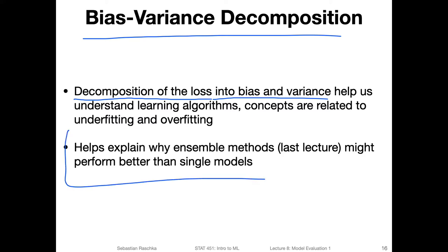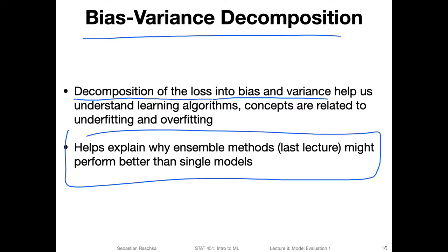In the context of the last lecture where we talked about ensemble methods, this can also help us better understand why they perform better than single models. For example, bagging reduces the variance compared to a single model, and boosting may decrease the bias compared to a single model. So both bagging and boosting manipulate how bias and variance behave compared to the single decision tree models used in the ensemble.